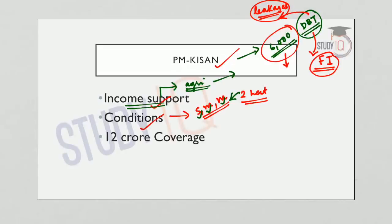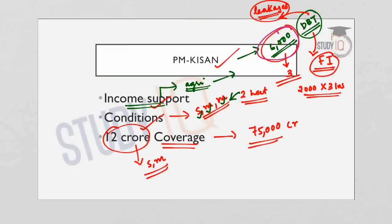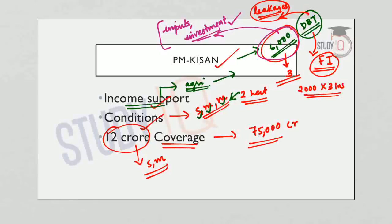The ₹6,000 per annum will be provided to the farmers in three installments of ₹2,000 each. The scheme is likely to cover 12 crore beneficiaries who belong to the small and marginal category, with an annual budgetary allocation of ₹75,000 crore. The ₹6,000 received by the farmer can be used for purchase of inputs or as investment in production activities, supplementing income to overcome agrarian distress.